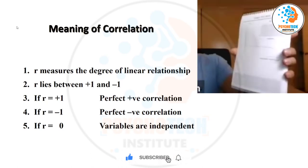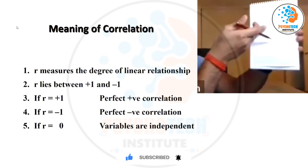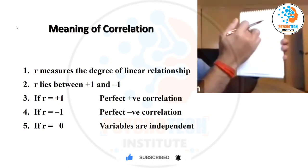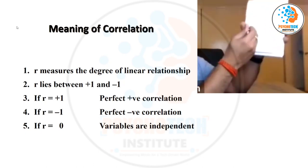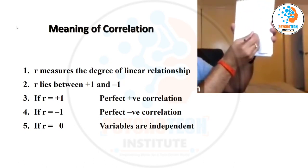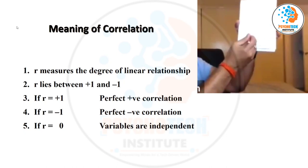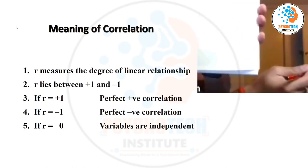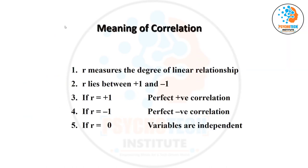If the dots are going up, that is positive correlation — x increasing, y increasing. If the dots go the opposite way, that is negative correlation: x is increasing but y is decreasing. That is the lower one.